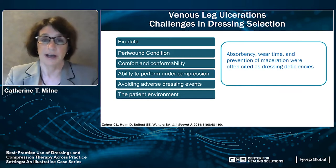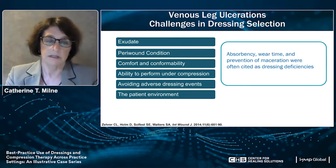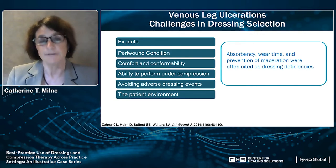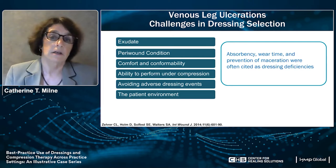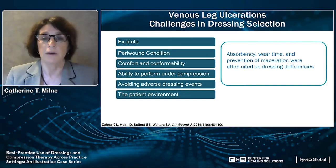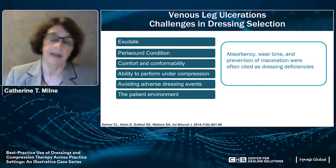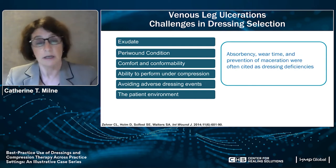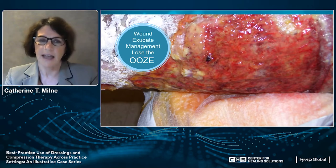A study by Zara and colleagues found that staff nurses were really concerned about exudate and peri-wound condition, and also whether a dressing placed on the wound would work well under compression. The nursing staff is essentially asking for something that's really absorbent, that can expand wear time, and prevent the maceration they usually see — which usually occurs because the dressing isn't absorbing the way it should.